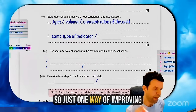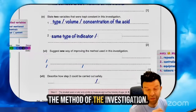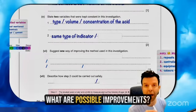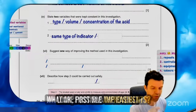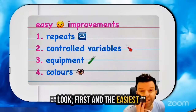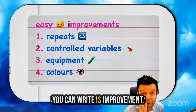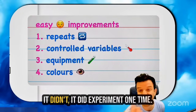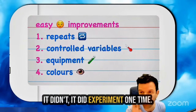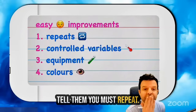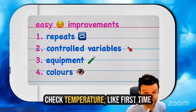Just one way of improving the method of the investigation — what are possible improvements? The first and easiest you can write is: repeats. If they did the experiment one time, tell them you must repeat. Check temperature.